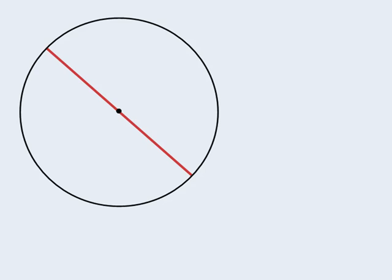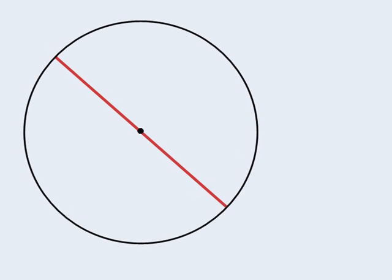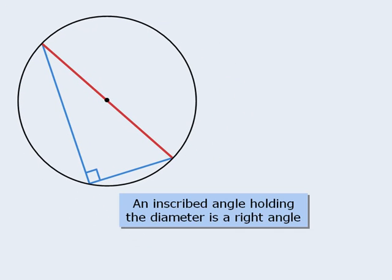The next property involves a very special chord that passes through the center of a circle. This chord is known as the diameter. If we have an inscribed angle holding the diameter, then that inscribed angle must equal 90 degrees. So we can say that an inscribed angle holding the diameter is a right angle.